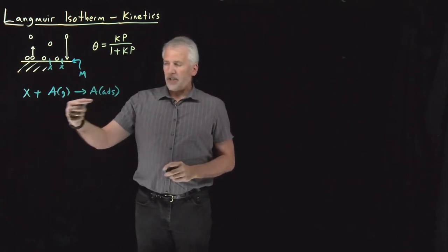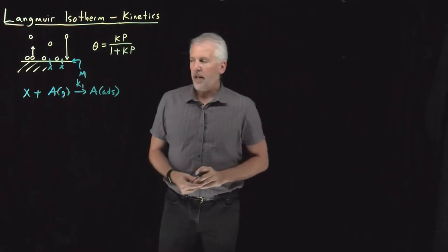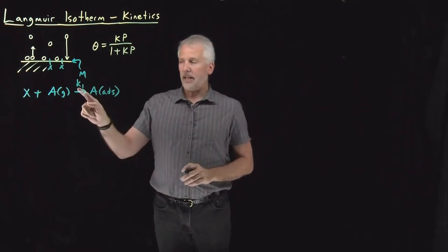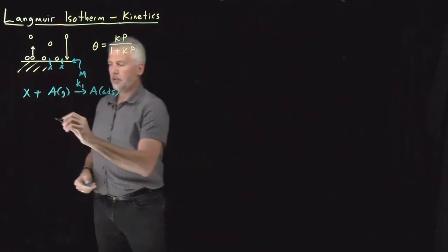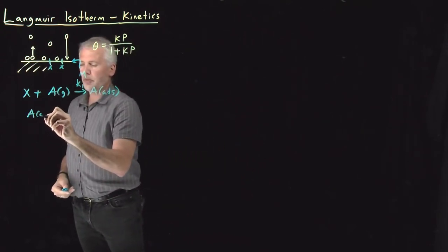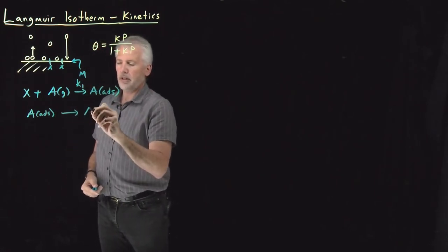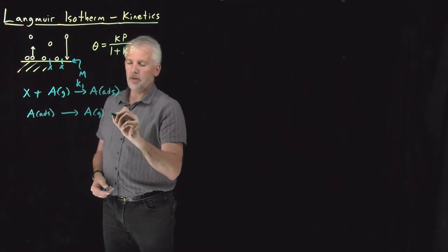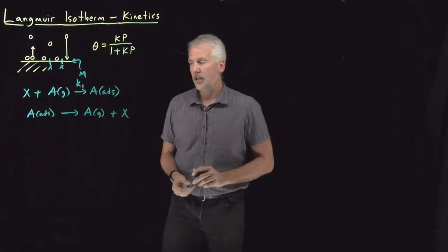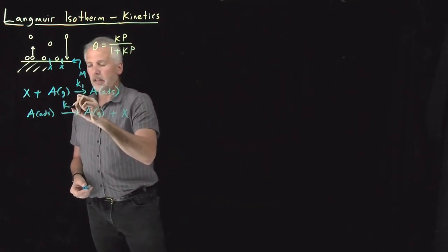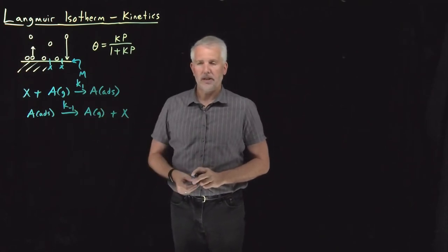In the forward reaction, in the adsorption direction, I can give that reaction a rate constant, lowercase k sub 1 for the forward reaction. For the desorption reaction, just the reverse of this reaction, when an adsorbed species desorbs off the surface, becoming a gas phase molecule and leaving an empty site behind as a product of that reaction, I'll write the rate constant for that reaction as k minus 1. It's the reverse of this reaction, k1.